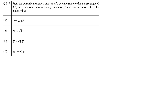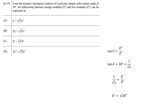In this question, a value of phase angle is given and we have to establish a relationship between storage and loss modulus. In dynamic mechanical analysis, the phase angle is the ratio of loss modulus to storage modulus; it is also known as tan delta or damping factor. Here the phase angle is 30 degrees, and tan 30 equals 1 over root 3. So the correct relationship is E′ = √3 E″. The correct answer is A.